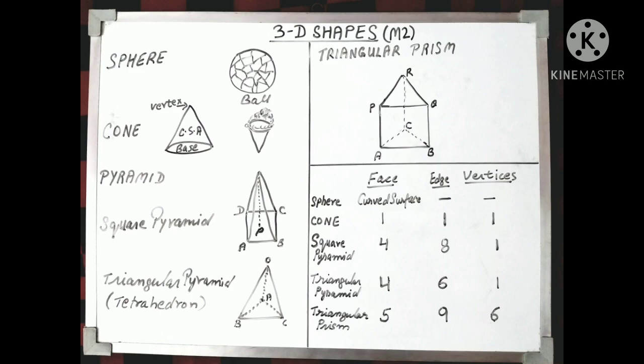If you label the top vertex as O, you will have the edges as OA, OB, OC, OD, then other edges are AB, BC, CD and DA.